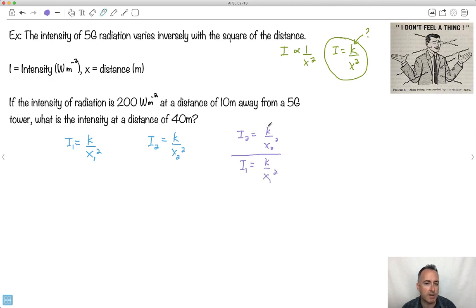I'm going to write myself an equation for i1, like the initial one. i1 is just going to be some constant over x1 squared. And I have some i2, some second intensity, just going to be that same constant over x2 squared. What I like to do is whenever I have a situation like this, I call these ratio questions.